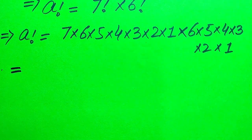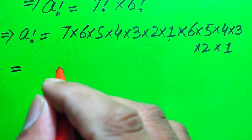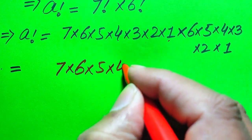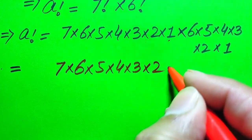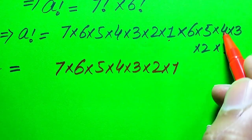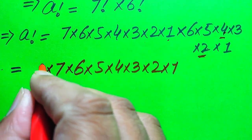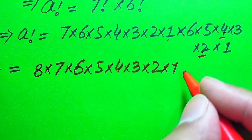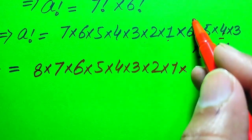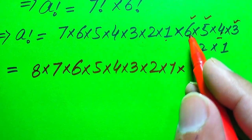Now we rearrange some terms to get the value of a. Writing all values out, we have 7 × 6 × 5 × 4 × 3 × 2 × 1. We notice that 4 × 2 = 8, so we move this 8 to the front of the expression. The remaining values are 6, 5, and 3.